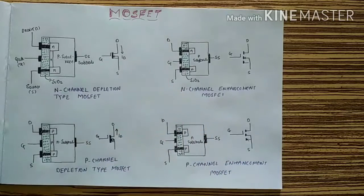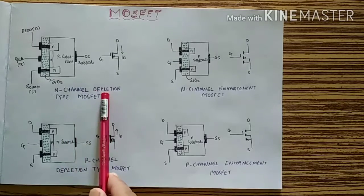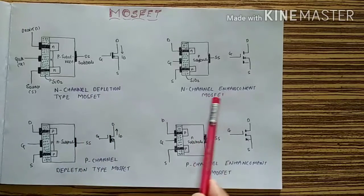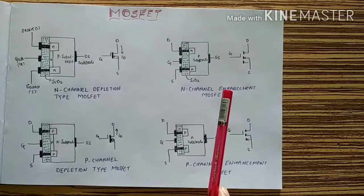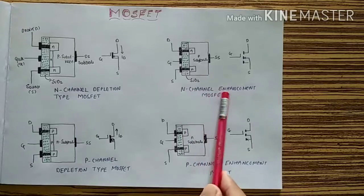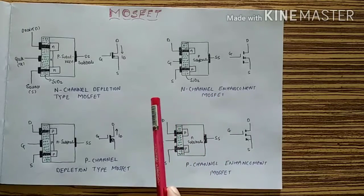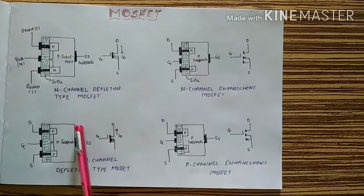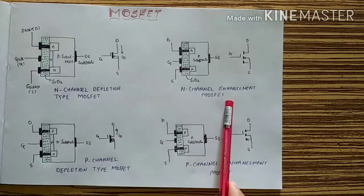It is a field effect transistor. There are two types of MOSFET: first is depletion type MOSFET and second is enhancement type MOSFET. Again, in depletion type there are two subtypes — N channel and P channel — and same for enhancement type.